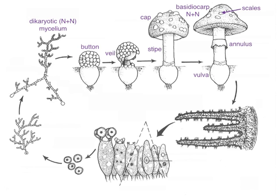If we take that and look specifically at the gills, which is where the action is — here are the gills — and we look at that microscopically, then the surface of the gills is covered by the cells that will undergo first fertilization and then meiosis.